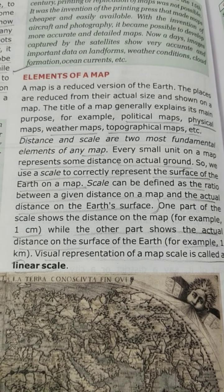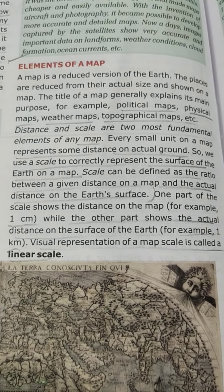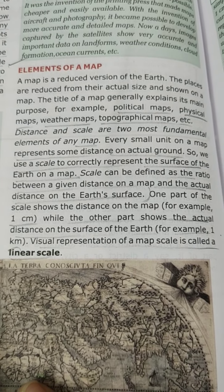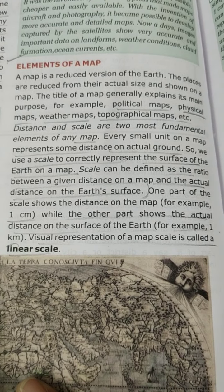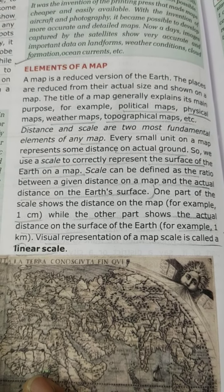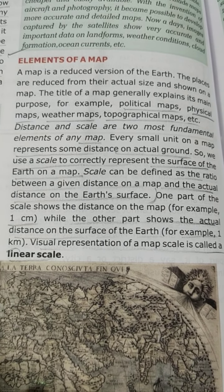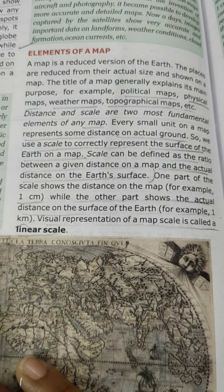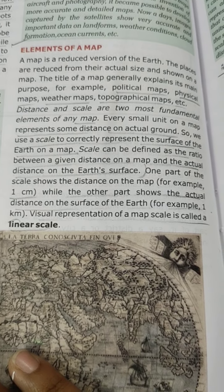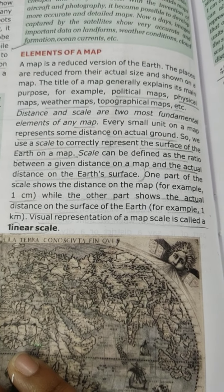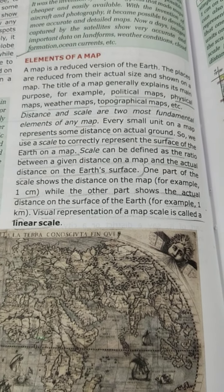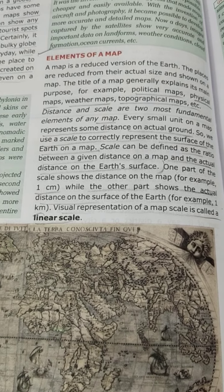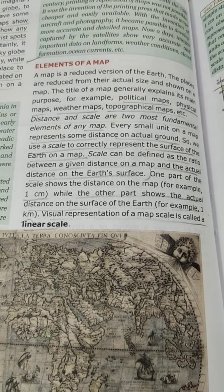Distance and scale are two of the most fundamental elements of any map. Every small unit on a map represents some distance on actual ground, so we use a scale to correctly represent the surface of the earth on a map. Scale can be defined as the ratio between a given distance on a map and the actual distance on the earth's surface. One part of the scale shows the distance on the map — for example, one centimeter — while the other part shows the actual distance on the surface of the earth — for example, one kilometer. The visual representation of a map scale is called a linear scale.